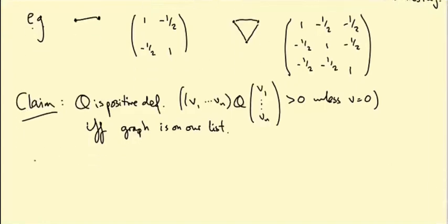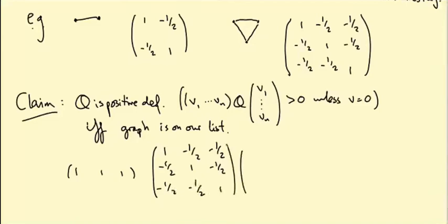So how does it work for this triangle? Well, if I take one, one, one, and then stick this matrix one minus a half minus a half minus a half, one minus a half, minus a half minus a half, one, and then one, one, one, what I get is zero. So that's not positive definite.